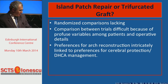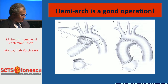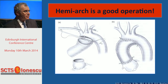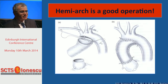The hemiarch is a good operation, and you don't have to do a total arch for the majority of your ascending patients — the ones whose aneurysm ends before the innominate artery. A hemiarch is a great way to treat them. You don't have to do the more extensive operation for many of these folks.